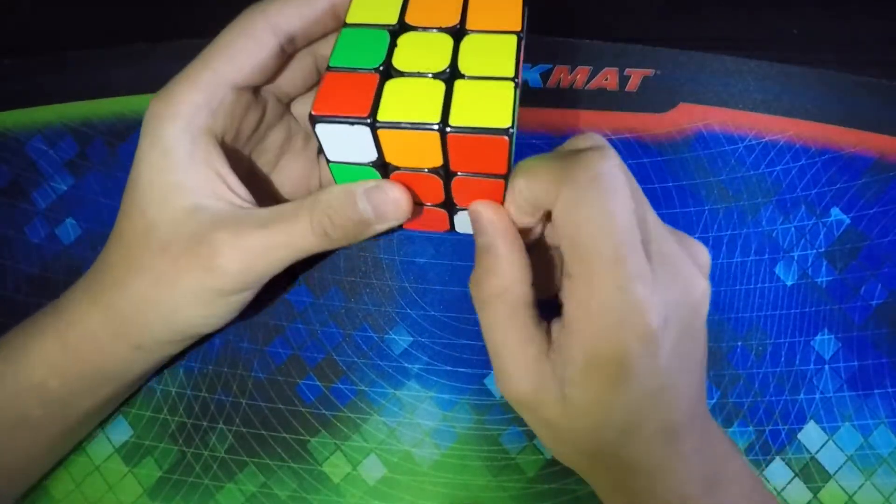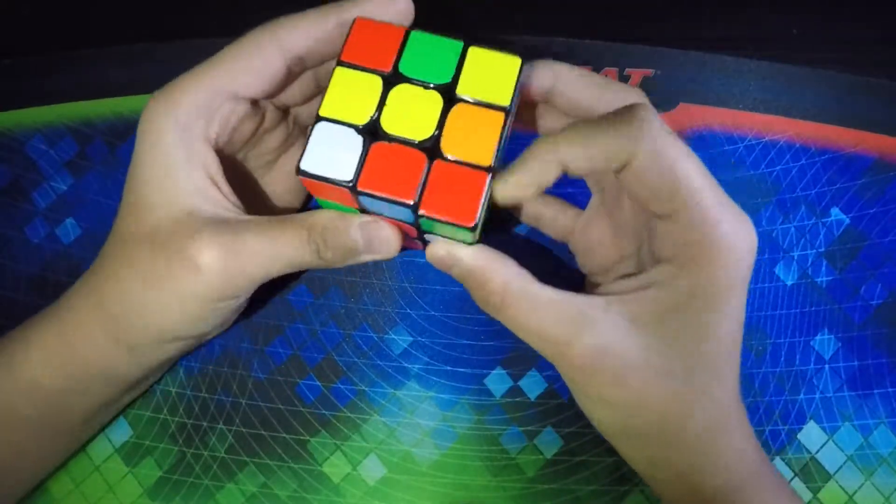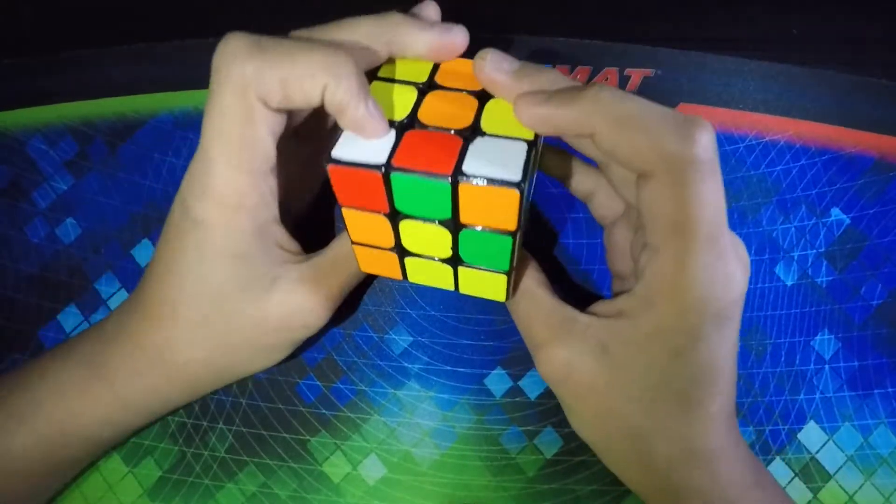And then the first pair I did was this one right here, this red corner. So I took out the corner, matched it up with the red, and then put that in.